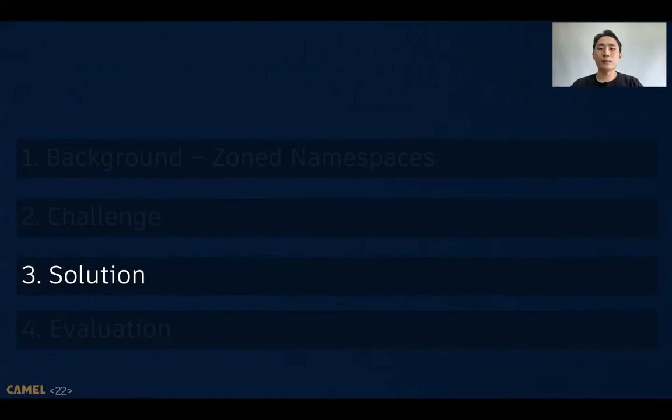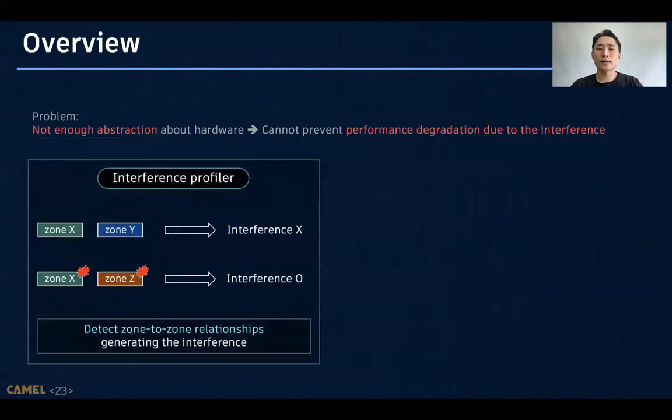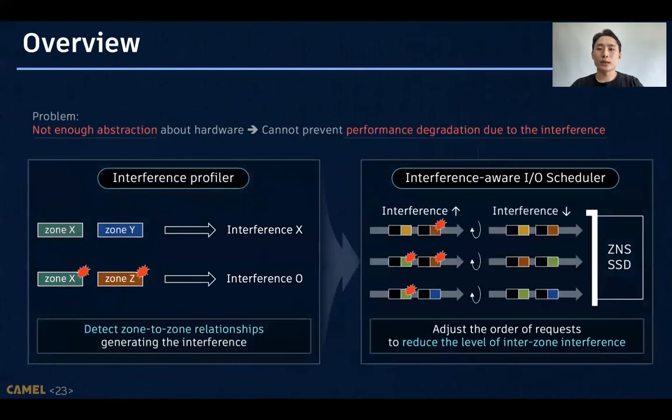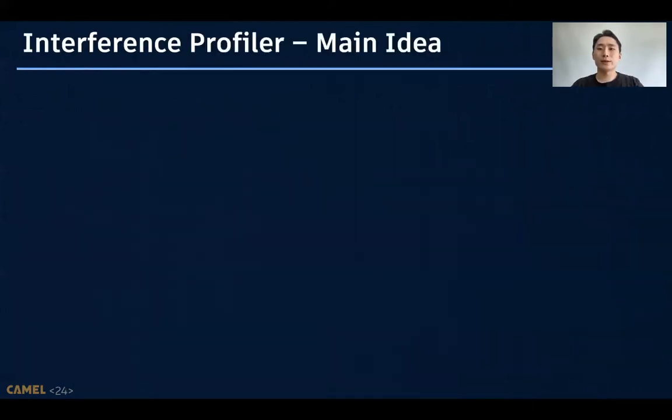To solve this problem, we suggest two simple modules. Our interference profiler detects zone-to-zone relationship generating the interference. And based on this information, our interference-aware IO scheduler adjusts the order of requests to reduce the level of interference. Now, let me first explain the interference profiler, which can easily get the information about the interference.